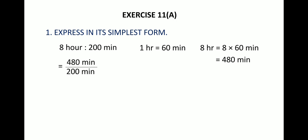The minutes can be cancelled and also the zeros in numerator and denominator will be cancelled, so we get 48/20. Now 48 and 20 both are divisible by 4, so 4 can cancel 48 twelve times and 20 five times. 12 and 5 cannot be cancelled further, so 12/5 is written as 12:5, which is its simplest form.